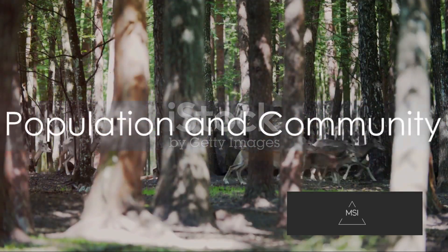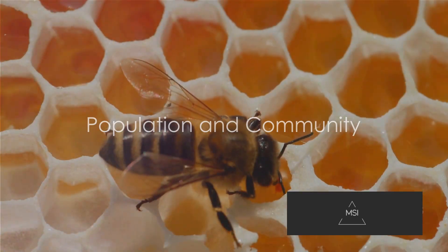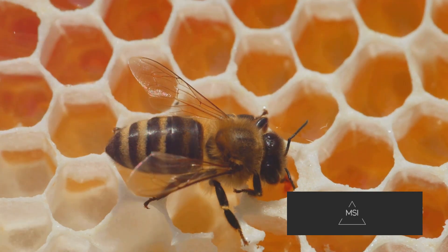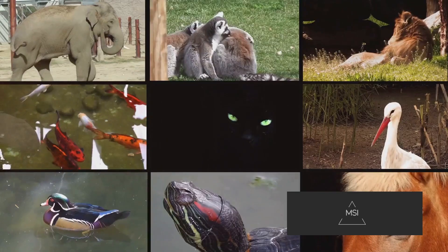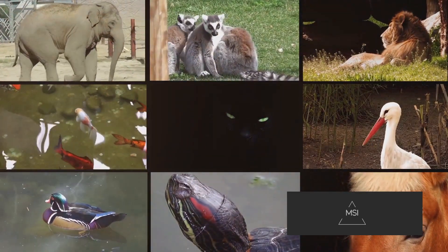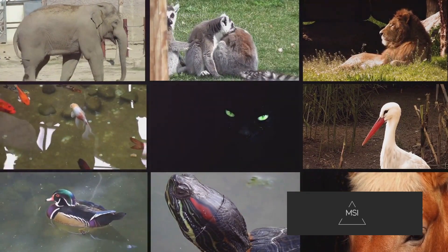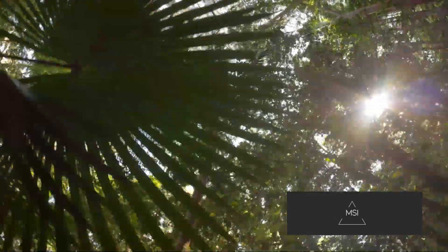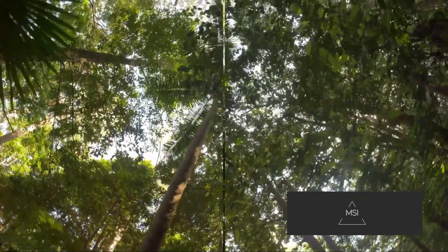Now let's expand our perspective. Organisms of the same species interacting with one another and their environment form a population. Populations of different species in a particular area make up a community. Each species influences the others, and together they shape the environment in which they exist.